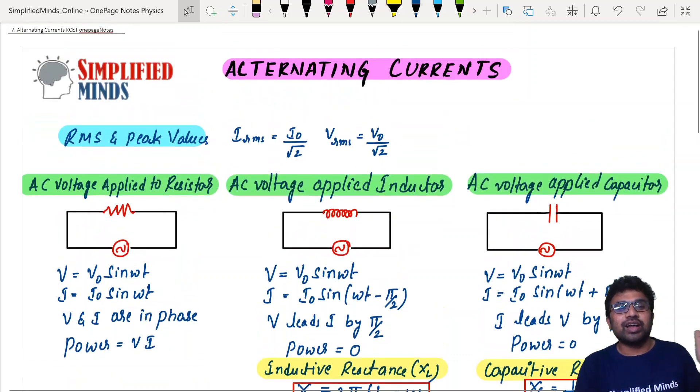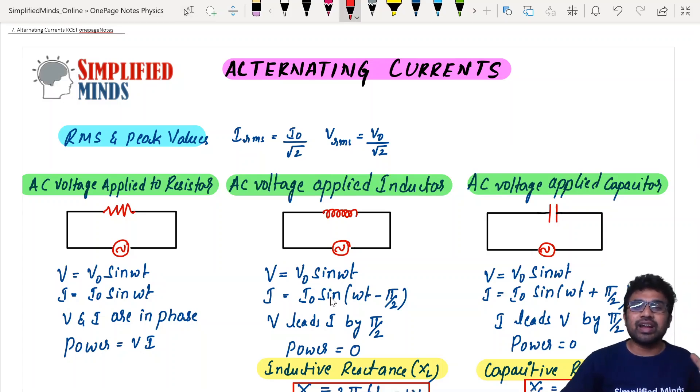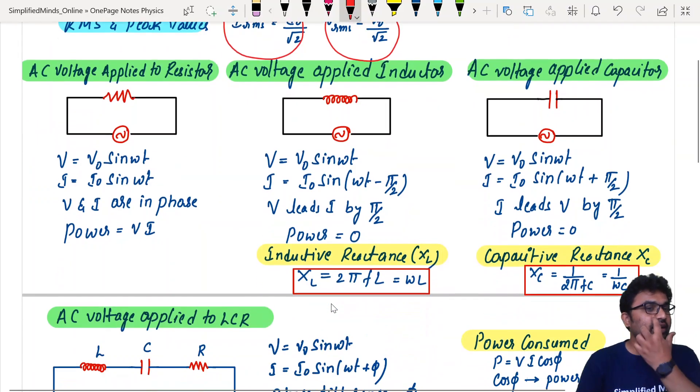The first one is RMS versus peak value. RMS value is nothing but how they are related. RMS is equal to I0 divided by root 2. Vrms is V0 by root 2. Always note that until it is mentioned, you are mentioned in the problem, always by default RMS will be used. Next, coming to AC voltage applied to resistor.